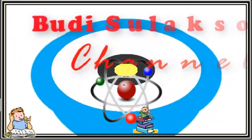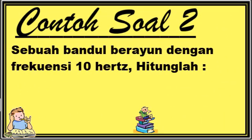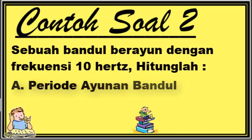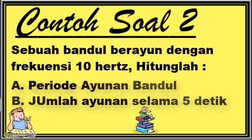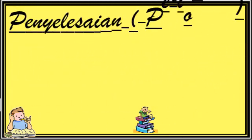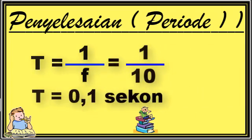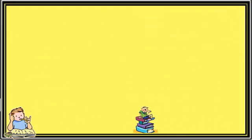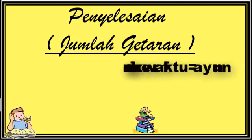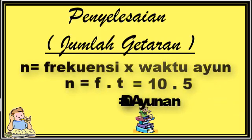Contoh soal 2: Sebuah bandul berayun dengan frekuensi 10 Hz. Hitunglah: A. Periode ayunan bandul, B. Jumlah ayunan yang terjadi selama 5 detik. Penyelesaian: T = 1/F = 1/10, sehingga diperoleh nilai periode = 0,1 sekon. Jumlah getaran atau N = frekuensi dikali waktu ayun, sehingga N = F × t = 10 × 5 = 50 ayunan.